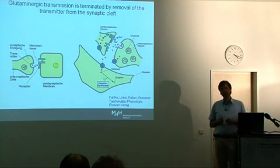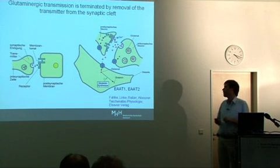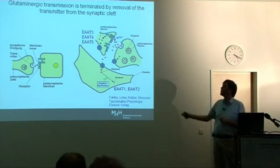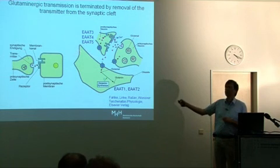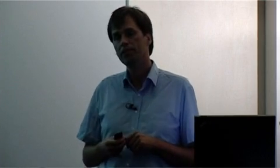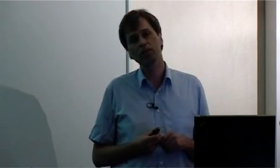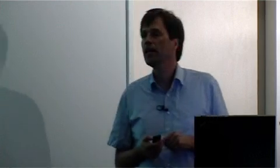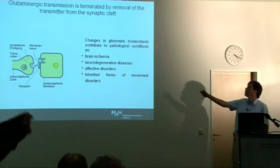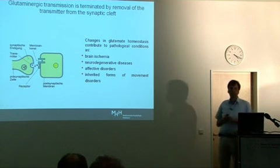There are five different isoforms. Two of those are glial-specific: EAT1 and EAT2. The remaining ones are expressed either in postsynaptic or presynaptic nerve terminals. The physiological importance of these neuronal and glial glutamate transporters is highlighted by several pathological conditions in which changes of glutamate homeostasis occur.